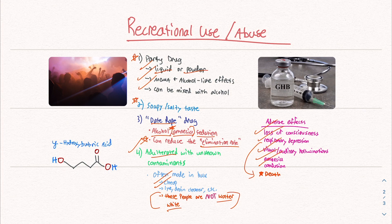We then closed out with talking about its use and abuse. It is a party drug that can come in liquid or powder form. Unfortunately, it does have the ability to produce amnesia, which is why it can be used as a date rape drug. And it reduces the elimination rate of alcohol.